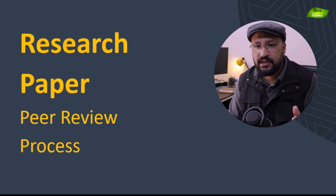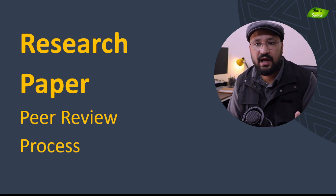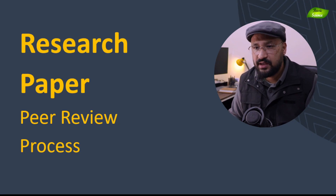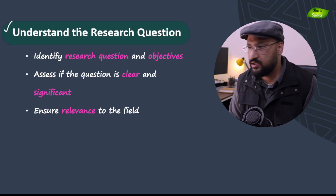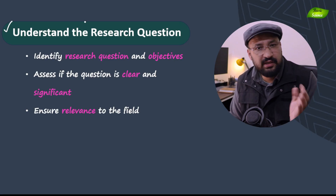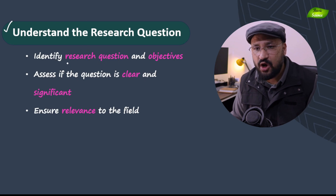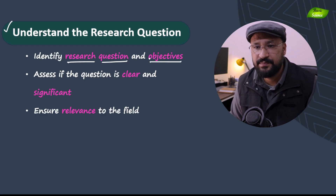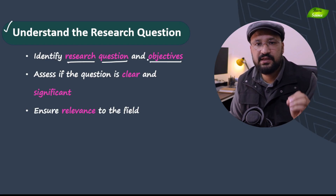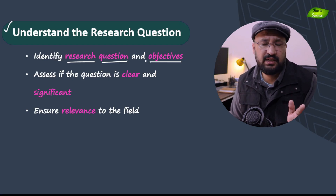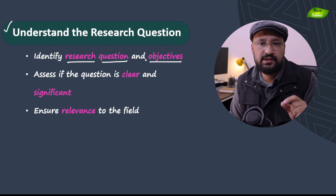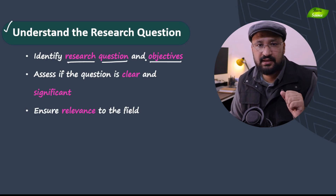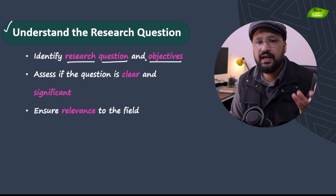We'll start with the first point, which is to understand the research question. This is the basic thing — whenever you get a paper, you need to understand what is the research question. Your first job is to identify that particular research question and the research objectives that are there in that particular study. Most probably reading the abstract will give you an idea of what the research question is. If it is not clear, you need to put a comment asking the authors to mention what research question they are trying to ask. Most of the time the title and abstract will give you a good idea about the research question.